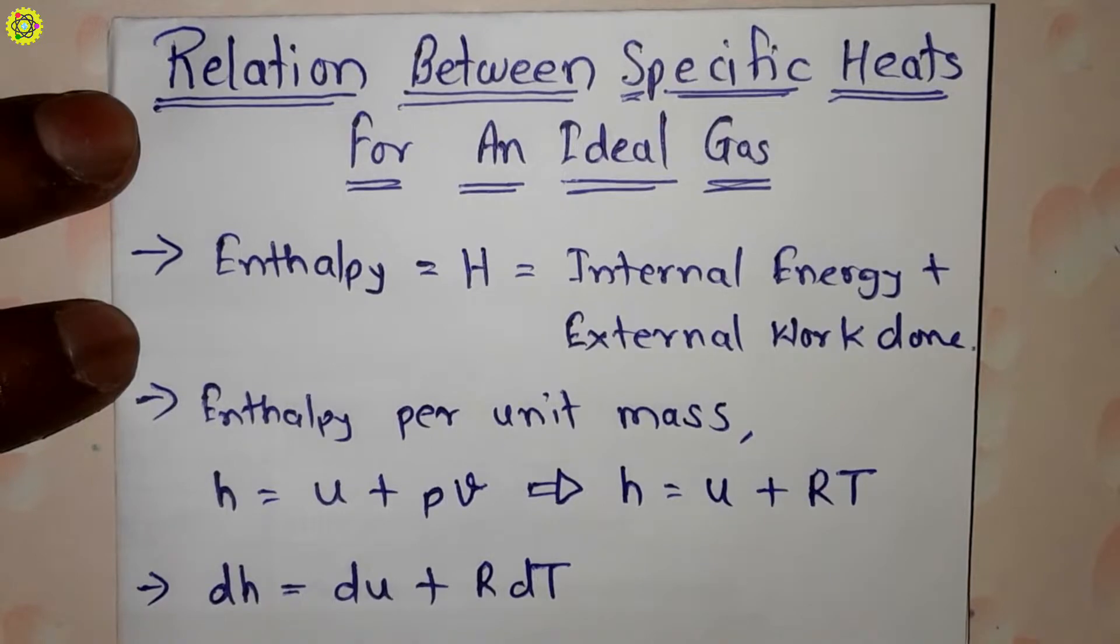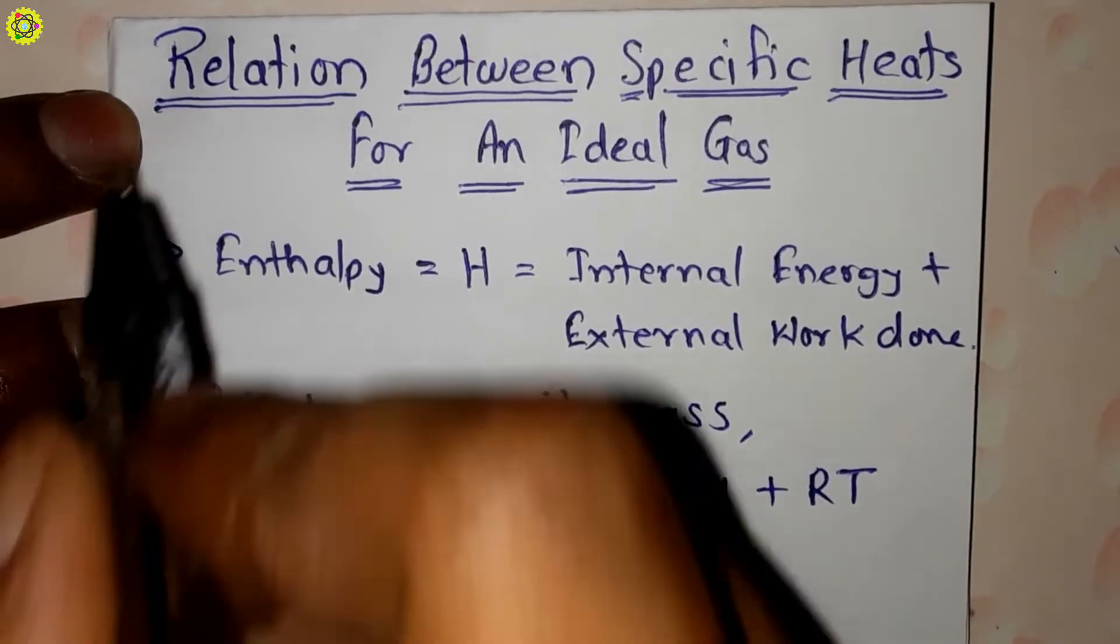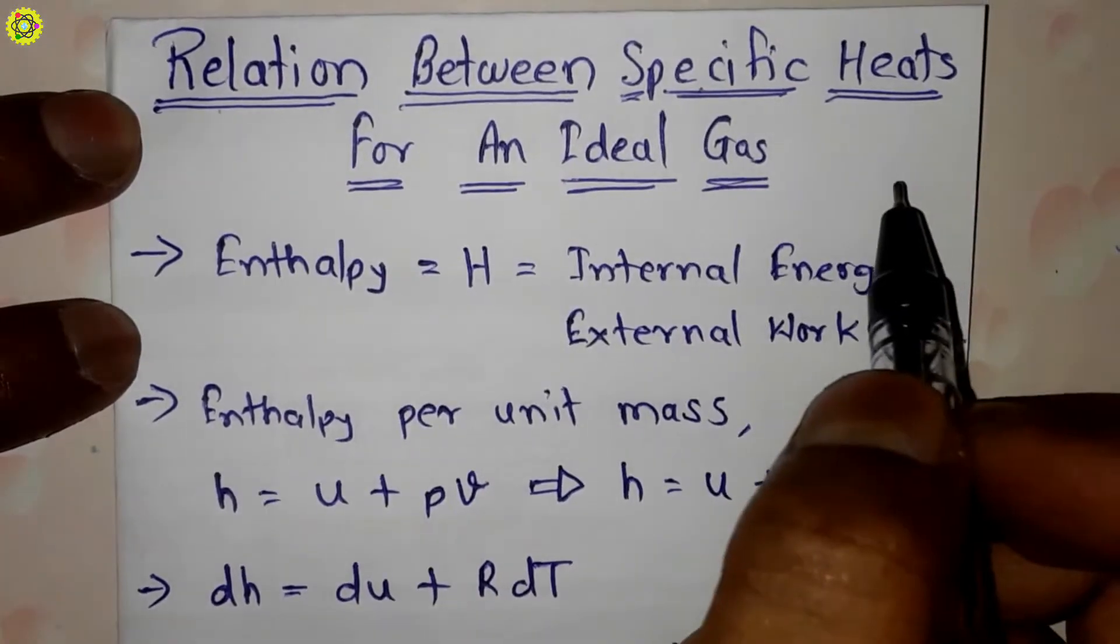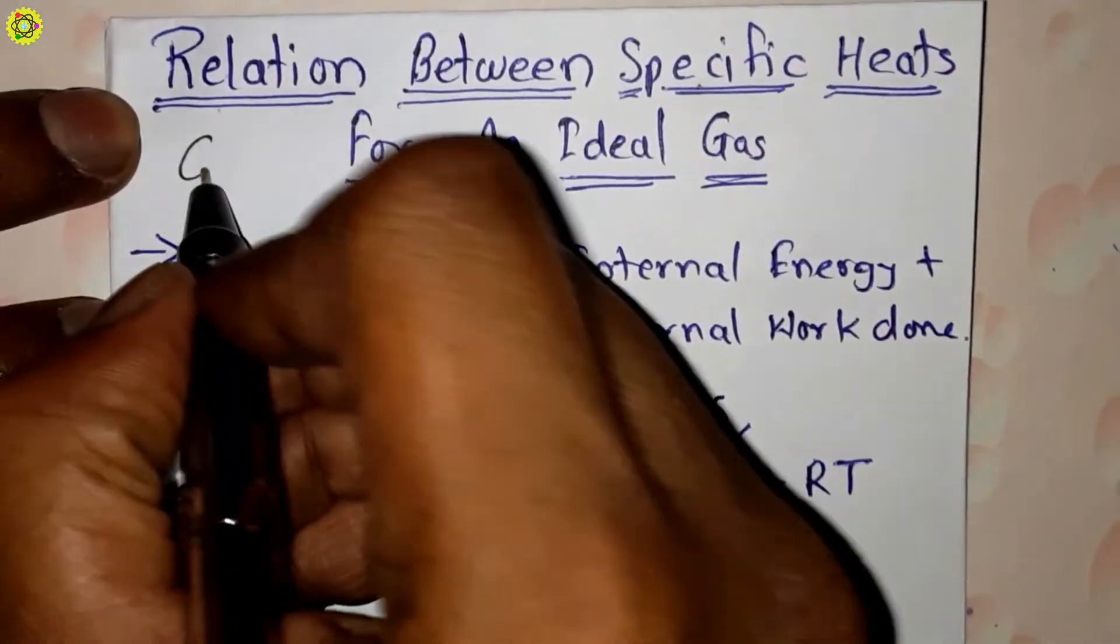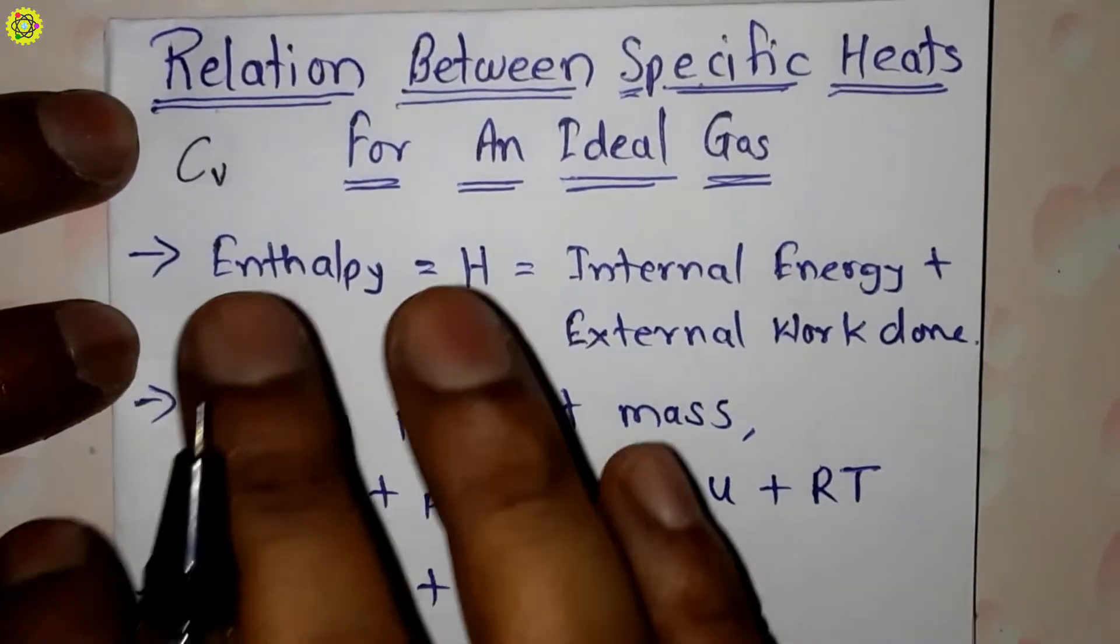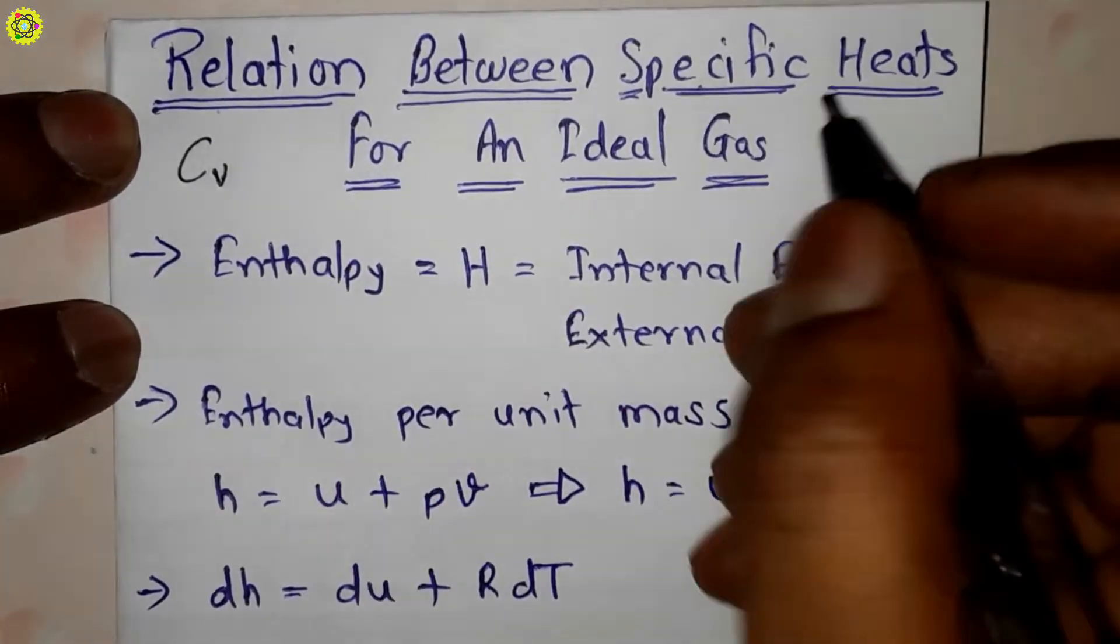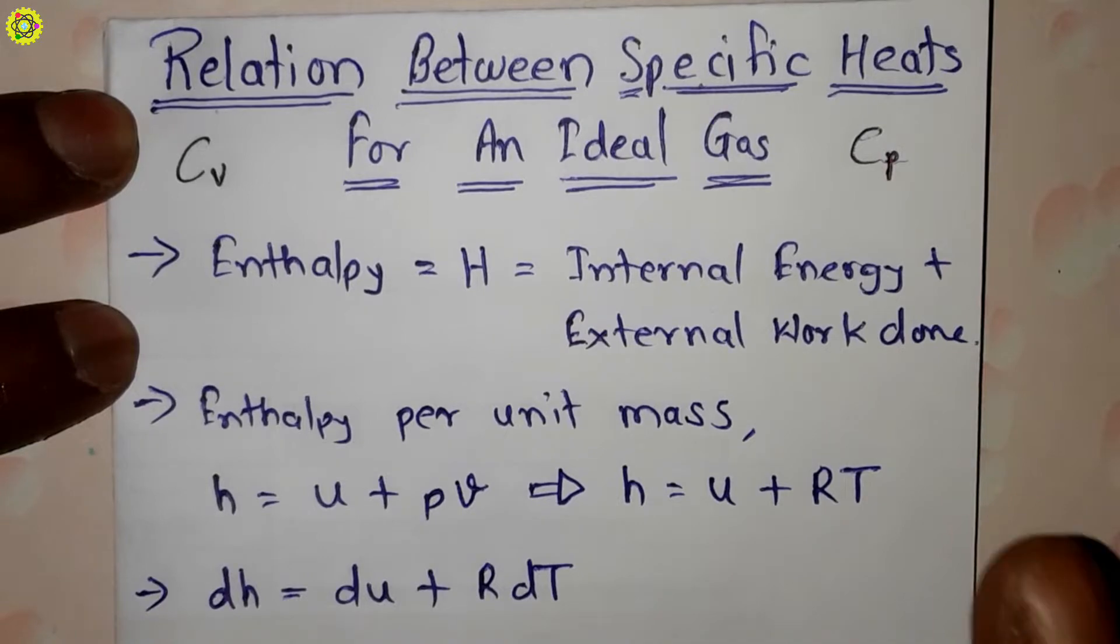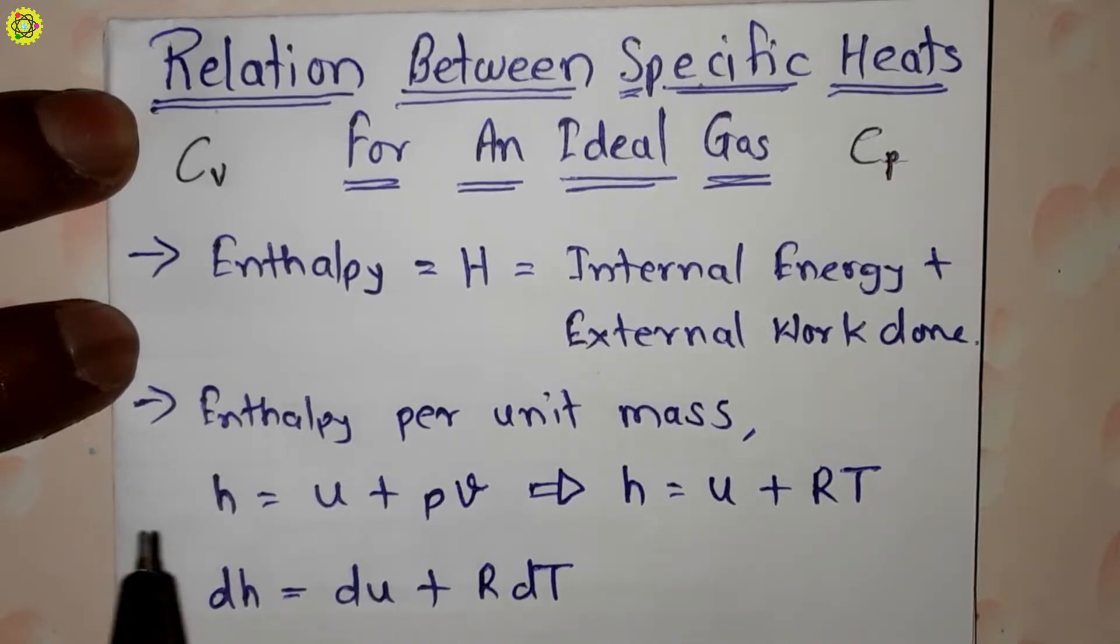Hi students, welcome. In this video we will study about relation between specific heats for an ideal gas. Here Cv is the specific heat at constant volume and Cp is the specific heat at constant pressure.